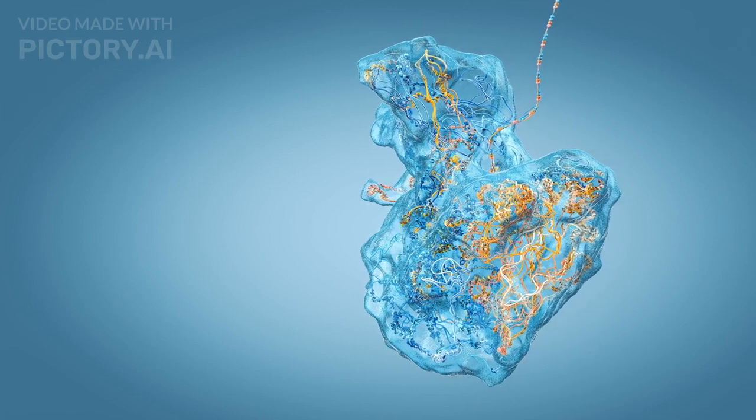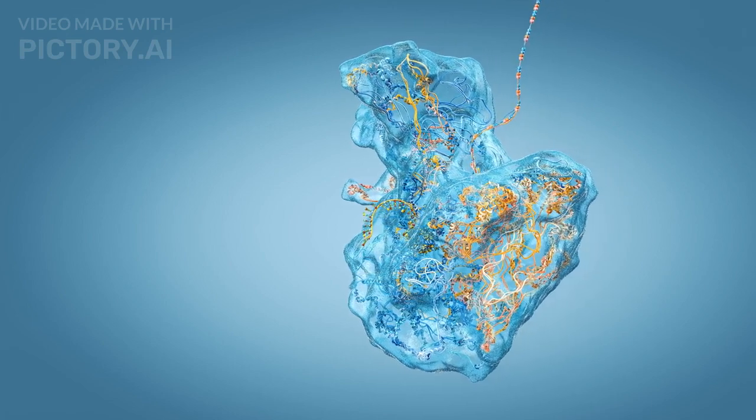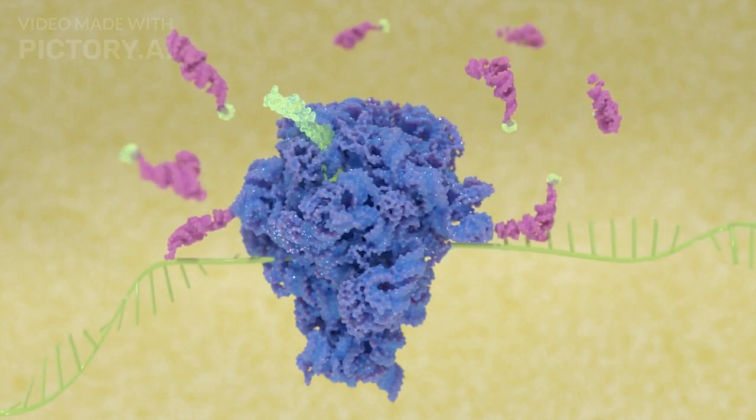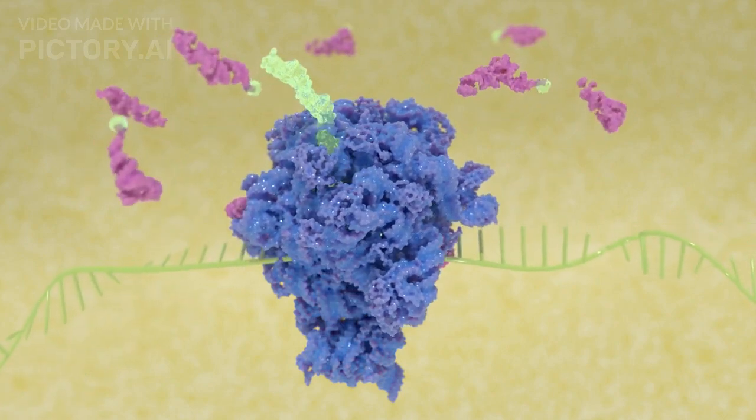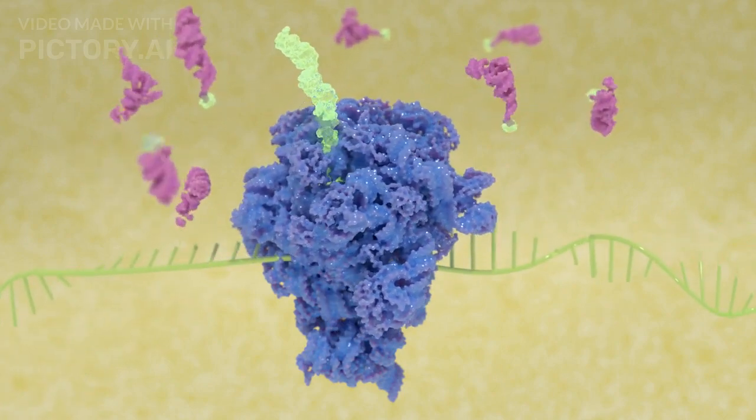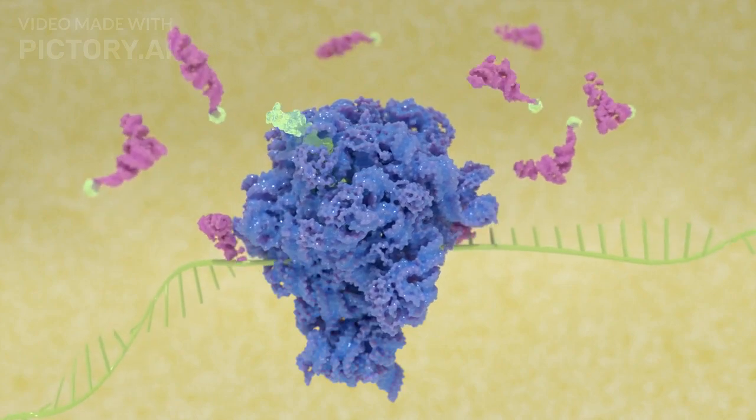The completed protein is released and begins folding into its final shape. Ribosomes read the genetic instructions carried by mRNA and assemble amino acids into proteins essential for cell function.